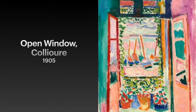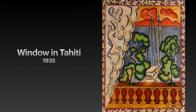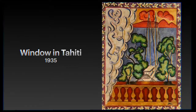This painting is one of Matisse's most well-known artworks. We are looking through an open window — look at the boats, plants, and color he used to paint the walls. This painting just looks so happy to me. This painting is named 'Window into Tahiti.' I love his trees, the swirls, the curtain, and the design on the window frame.